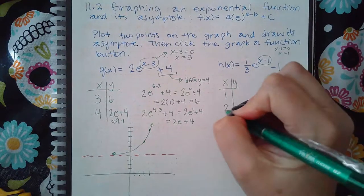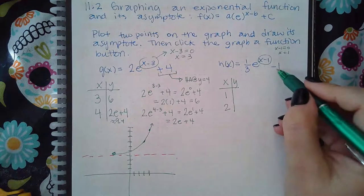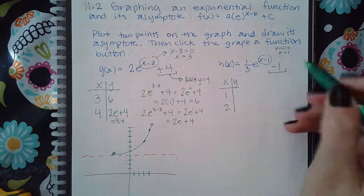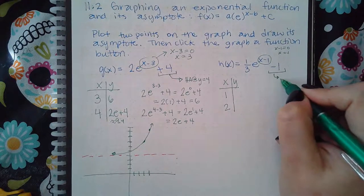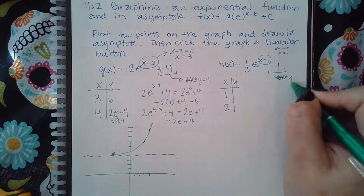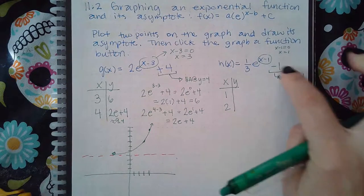So one and then two. And then you have to also think about your horizontal asymptote. And so this one is going to be at y equals negative one because it's a negative one.